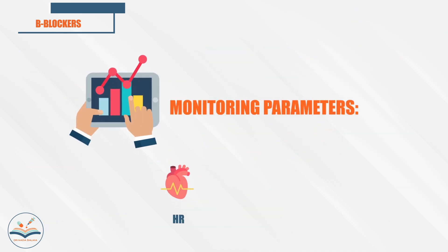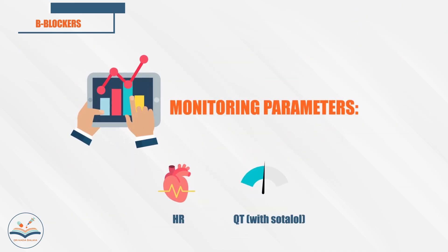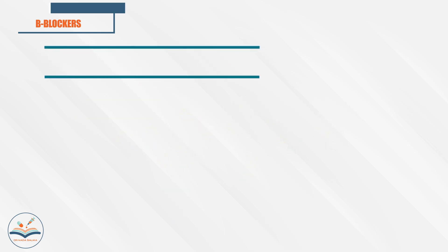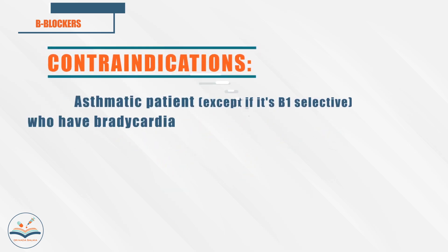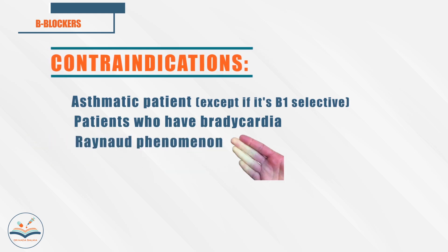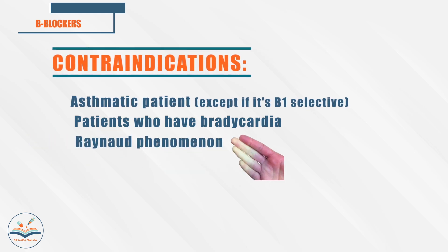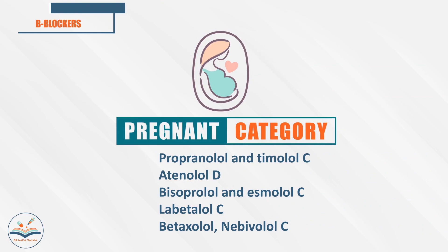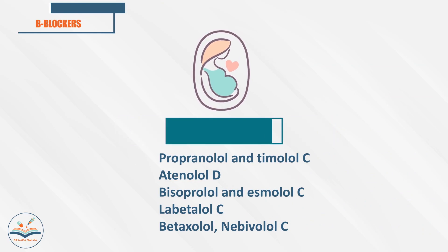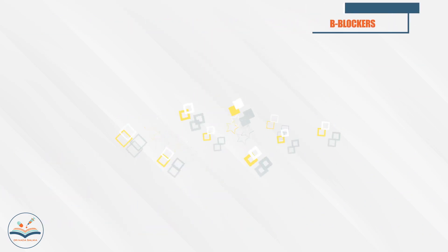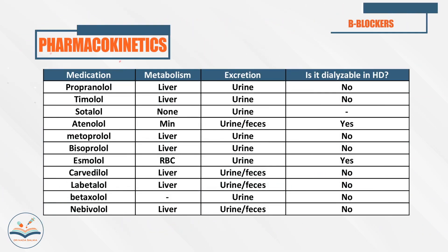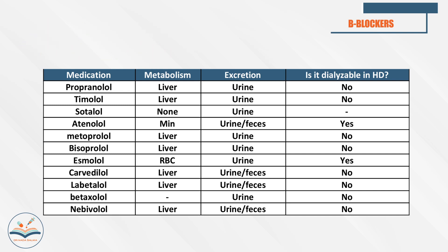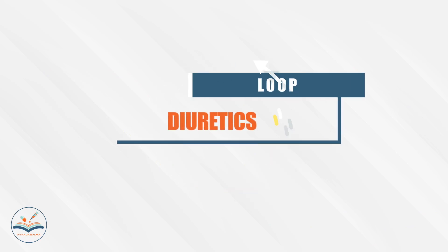We have to monitor heart rate and QT interval. Beta blockers are contraindicated in asthmatic patients, patients with bradycardia, and Raynaud's phenomenon. Atenolol is category D during pregnancy and the rest are category C. Most are metabolized by the liver and excreted by urine and feces, and most are not dialyzable.